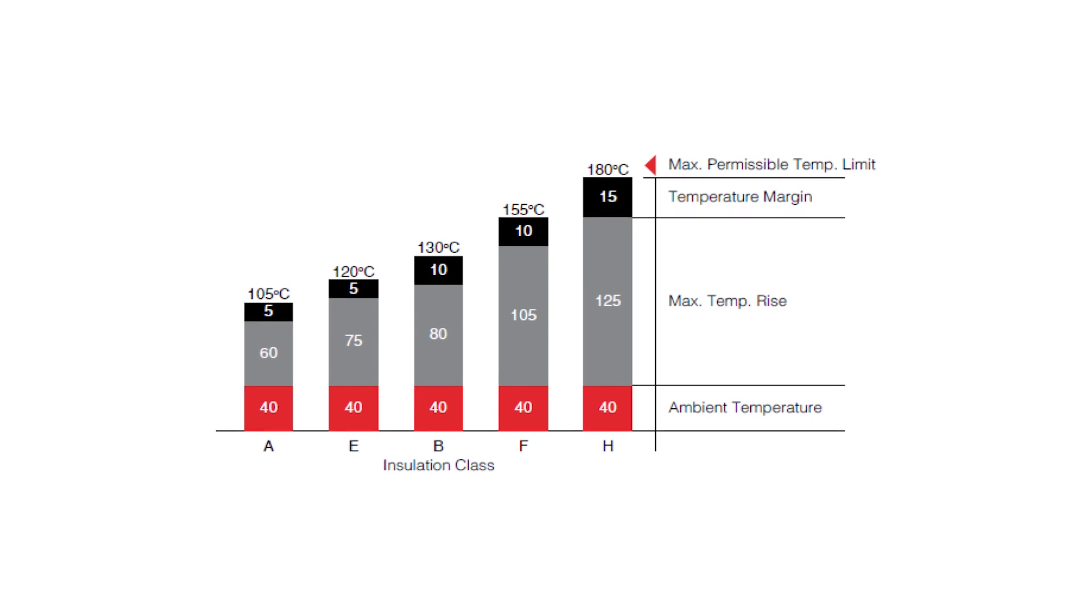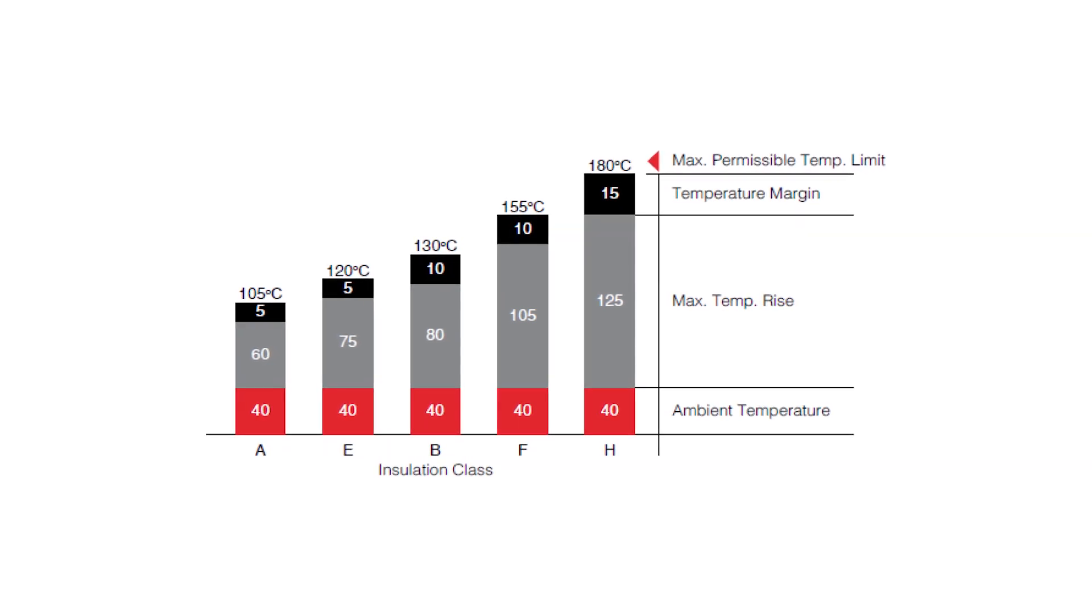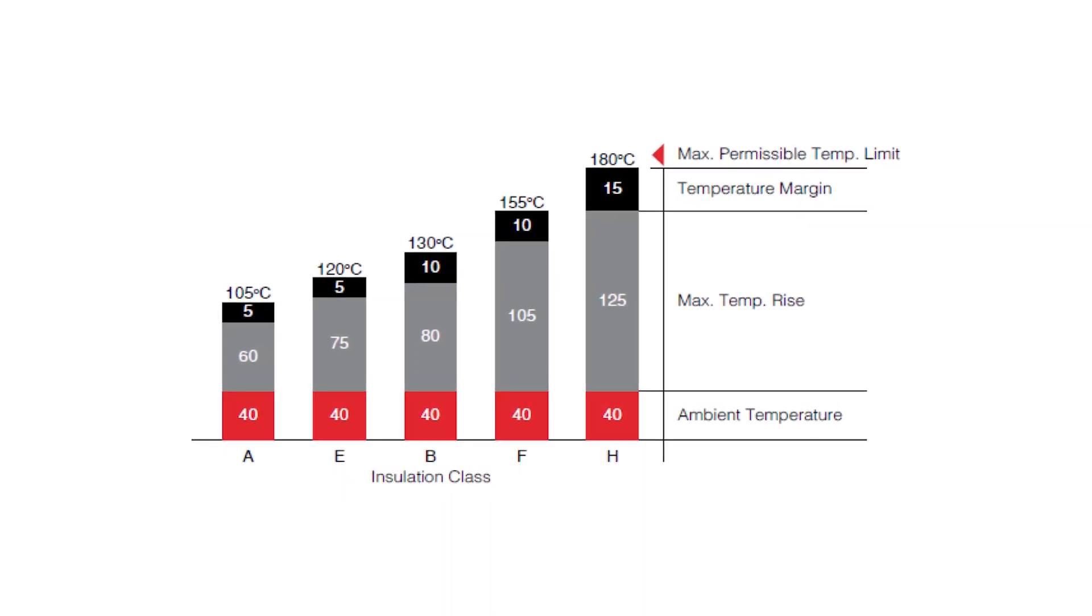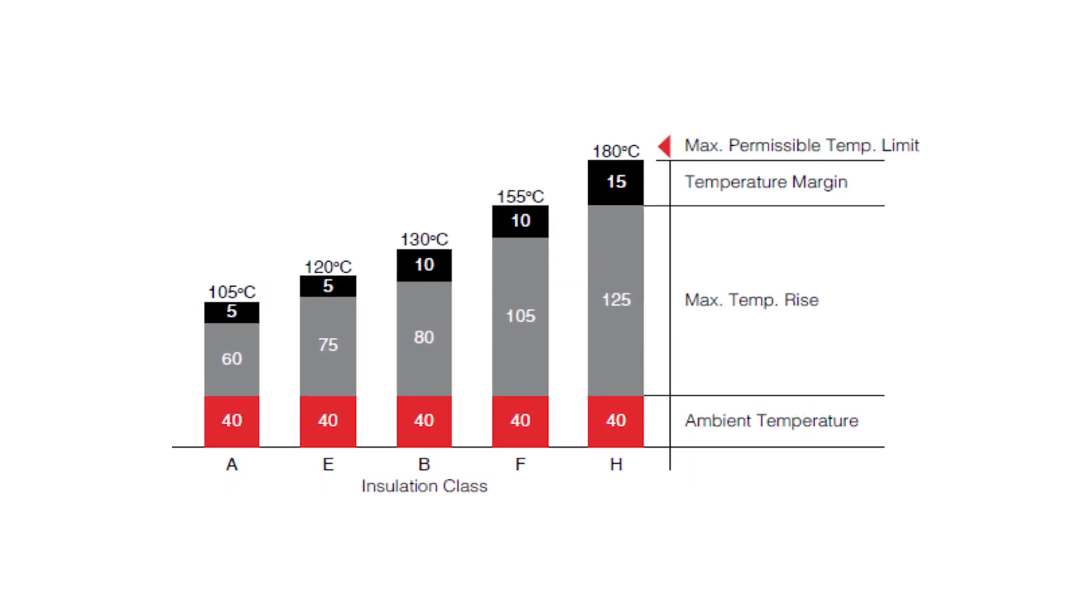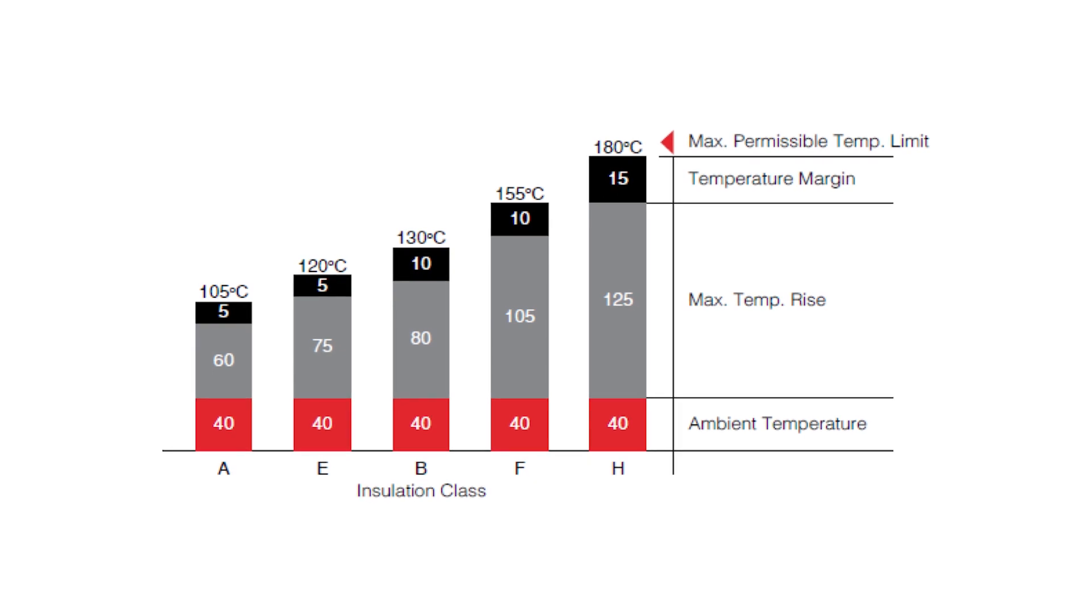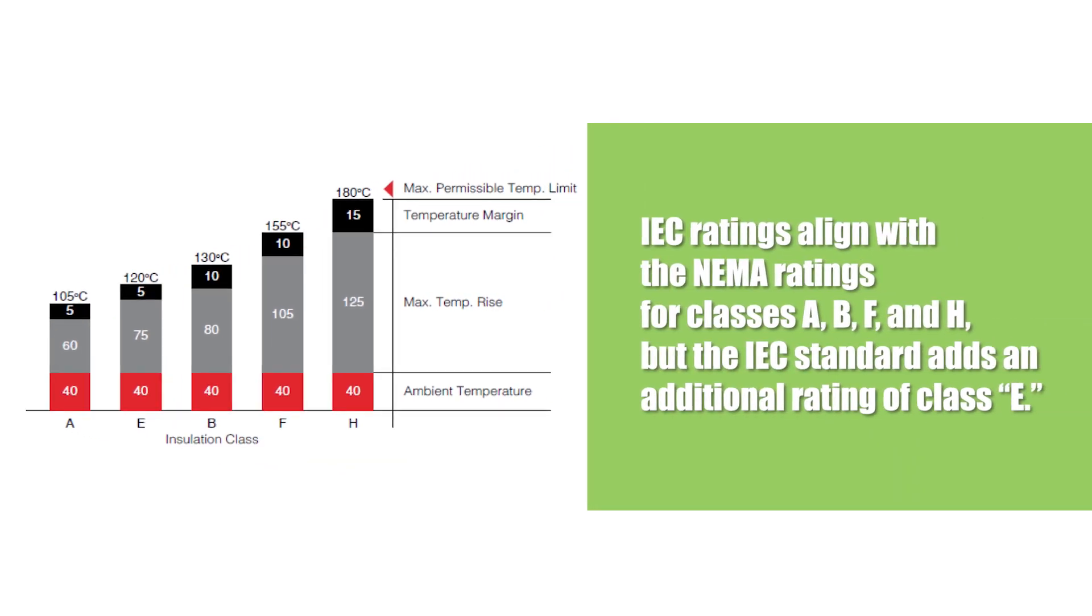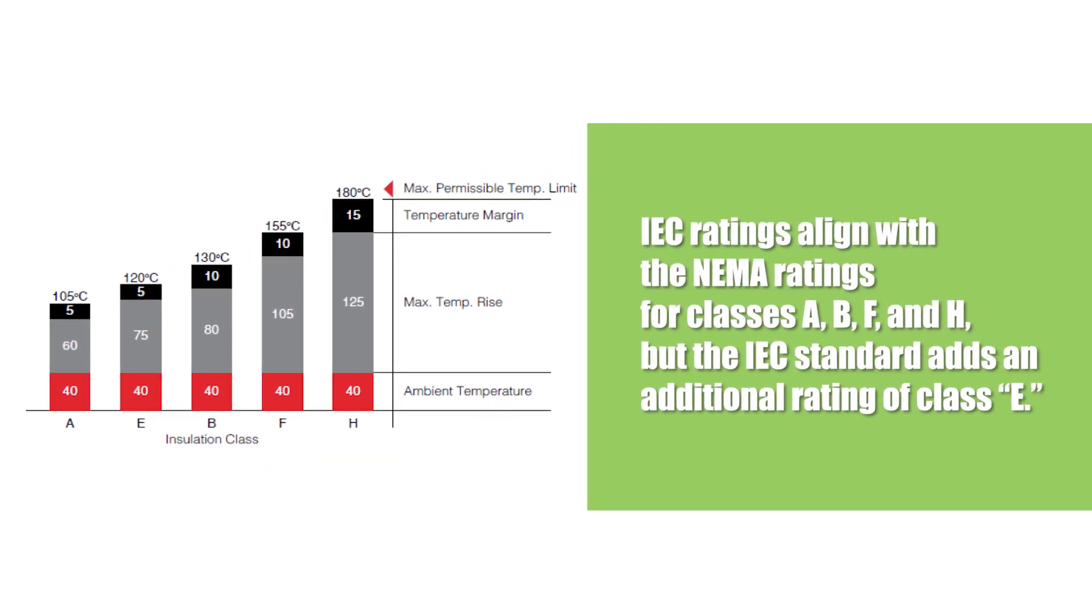Although the NEMA insulation classes are widely recognized in North America, the IEC 60034-1 standard is often used for motors made or sold outside of North America. The IEC ratings align with the NEMA ratings for Class A, B, F, and H, but the IEC standard adds an additional rating of Class E.